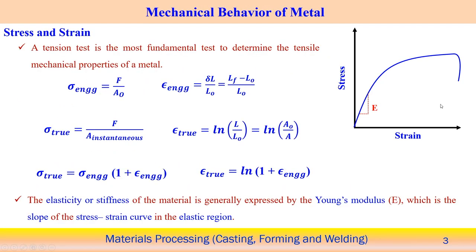These are the overview of this module — Module 5 — which is associated with the bulk deformation of material, and of course the maximum temperature is below the melting point temperature of the component. Now first we will try to discuss the mechanical behavior of metals.